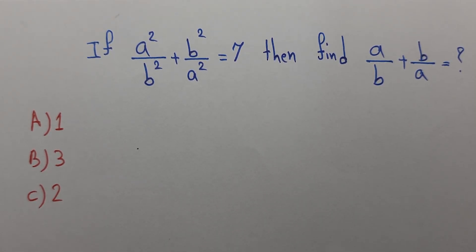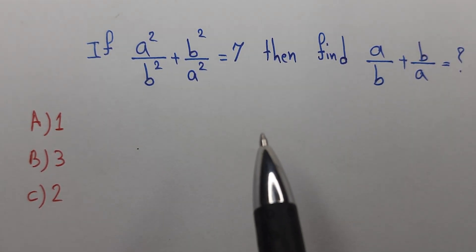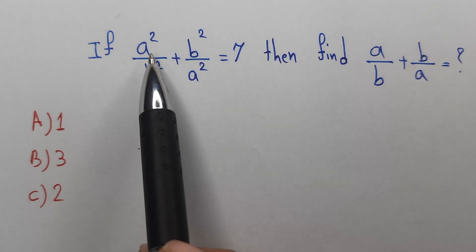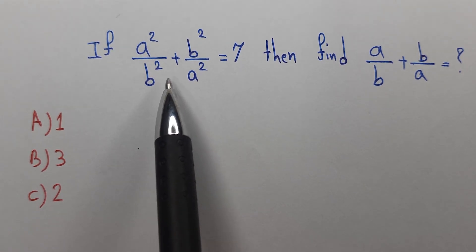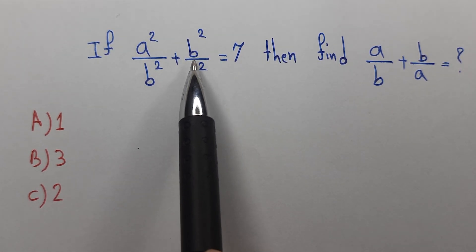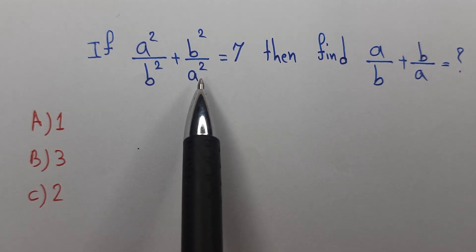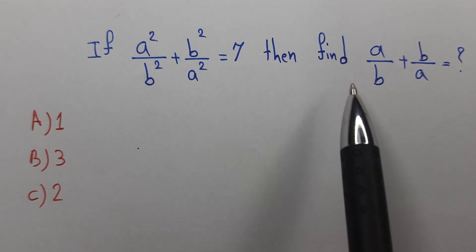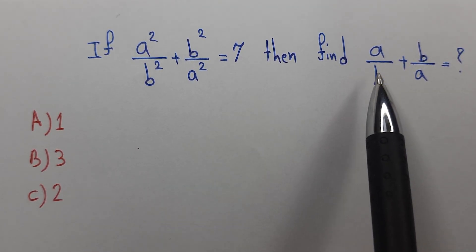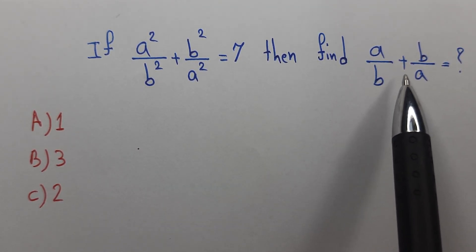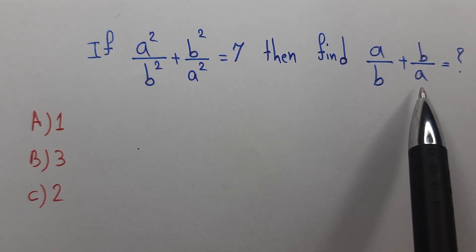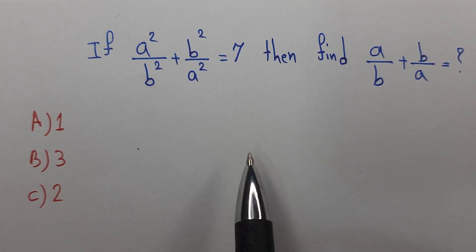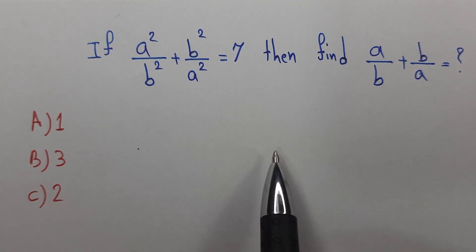Here you are with the question: if a² / b² + b² / a² equals 7, then find a/b + b/a. So what do you think we can do here?